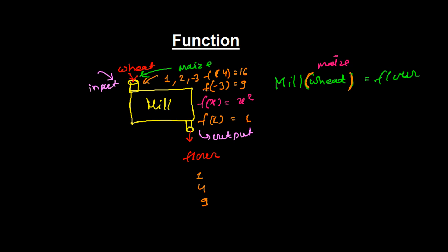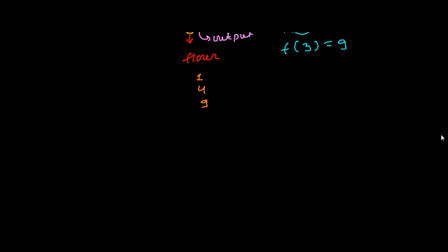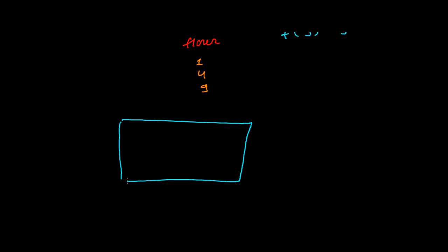Two inputs can result in the same output. In this function, putting −3 gives 9, and putting +3 also gives 9 — but each input is getting only one product. Keep in mind: for every one raw material, there will be one unique product. A function is like a manufacturing machine where you put some input and get some output.